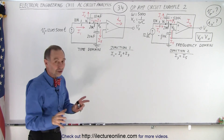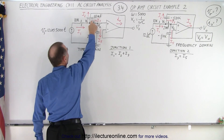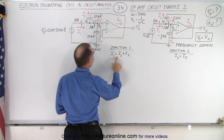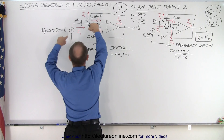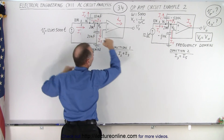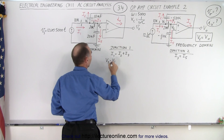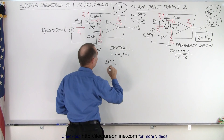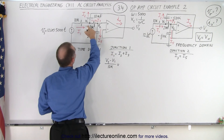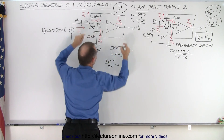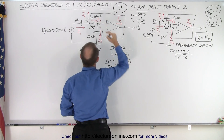We're going to take a look at those two junctions and set up an equation, because the current into the junction must equal all the currents leaving the junction. So in this case, I1 must equal I2 plus I3. I1 is going to be the voltage difference V_source minus V1, divided by the impedance in between, which is 10k. And that equals I2. I2 will be the difference V1 minus V_out divided by the impedance in between.